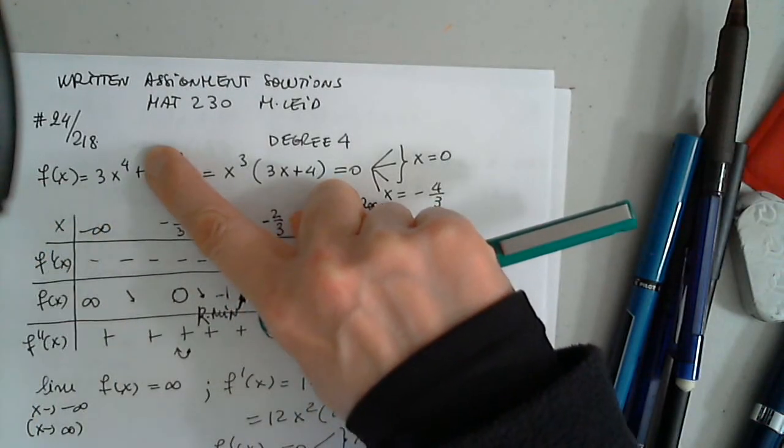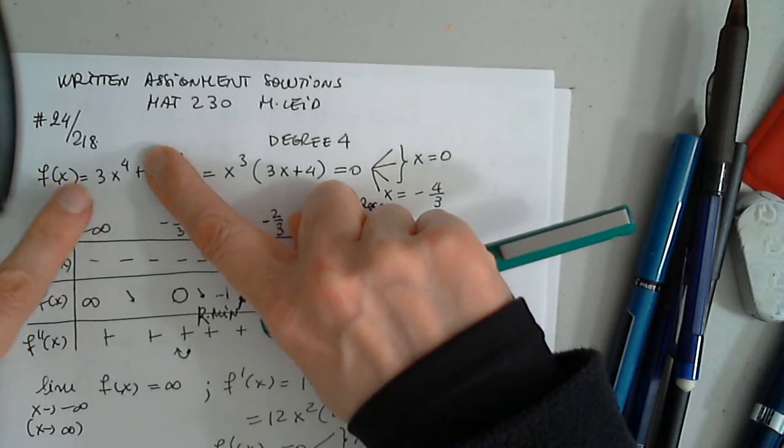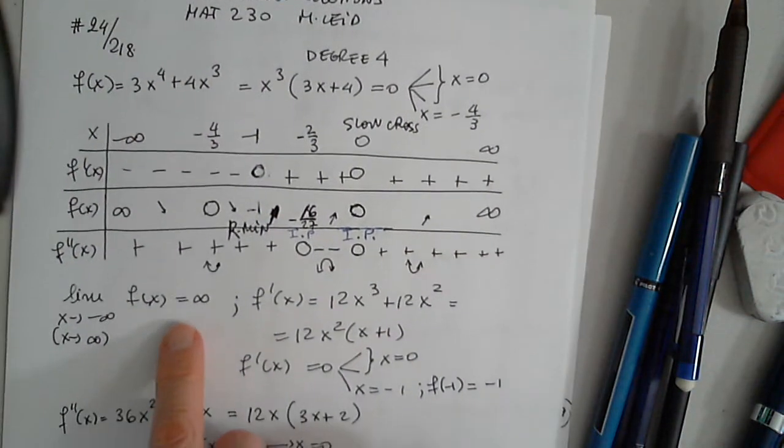Then I found the limits at infinity and negative infinity, since from these two terms, this is the most powerful one. Then when x approaches infinity or negative infinity, the function will approach infinity in both cases.